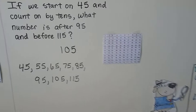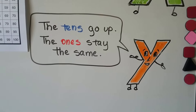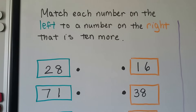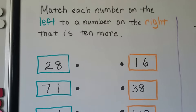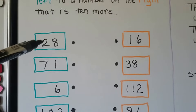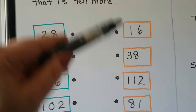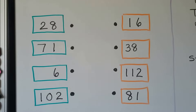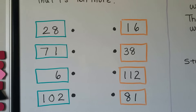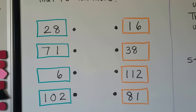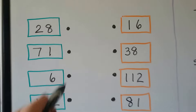The chart can help us. Remember that the tens go up and the ones stay the same. We can match each number on the left (the green ones) to a number on the right (the orange ones) that is 10 more. What number is 10 more than 28? Do you see an orange box number that is 10 more than 28? The ones place is going to stay the same and the tens are going to go up by one. If you said 38, you're right.